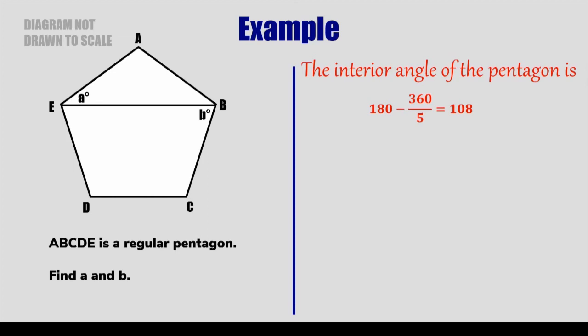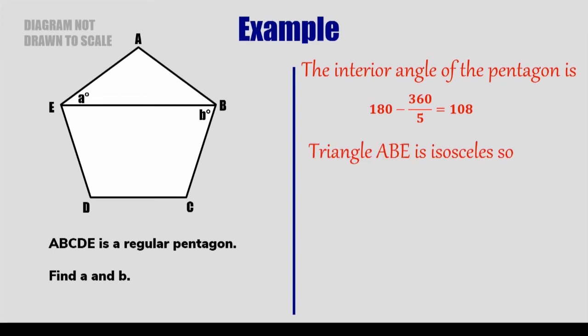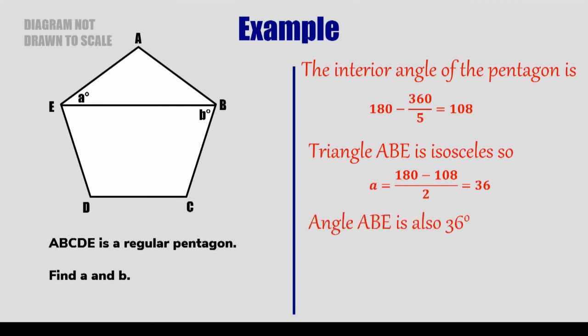So that means the two angles at the bottom of that isosceles triangle will both be the same size. So if we subtract 108 from 180 and divide it by 2, it'll tell us what each of those two angles are. So A must be equal to 36. So now we know what A is. The angle ABE is also 36. And the angle B is what you get when you subtract that 36 from the size of the interior angle at B. So subtract 36 from 108, and the angle B must be 72 degrees.